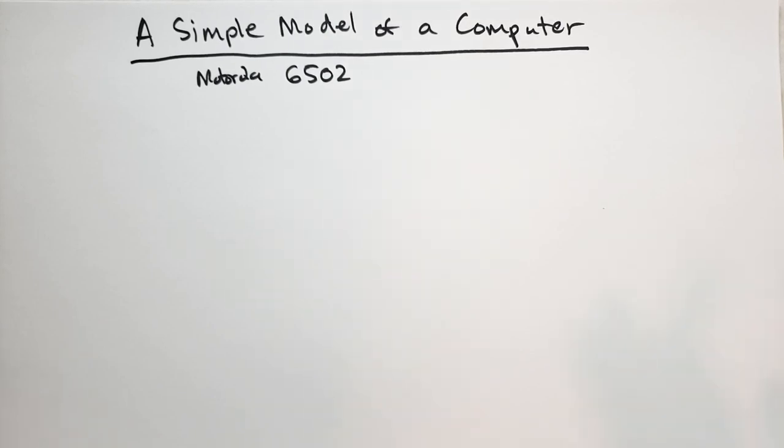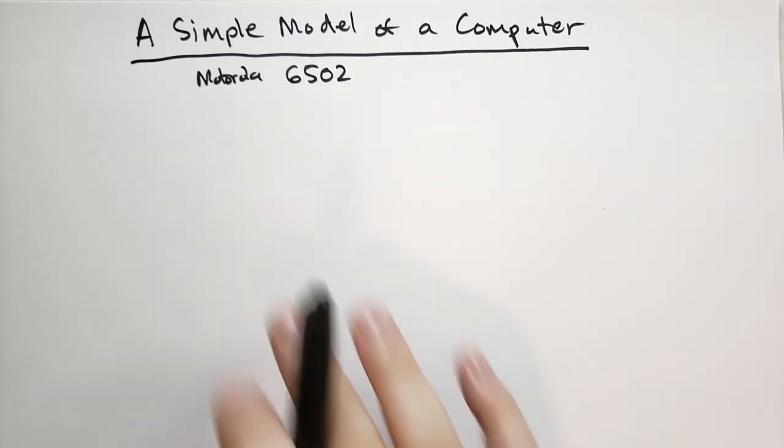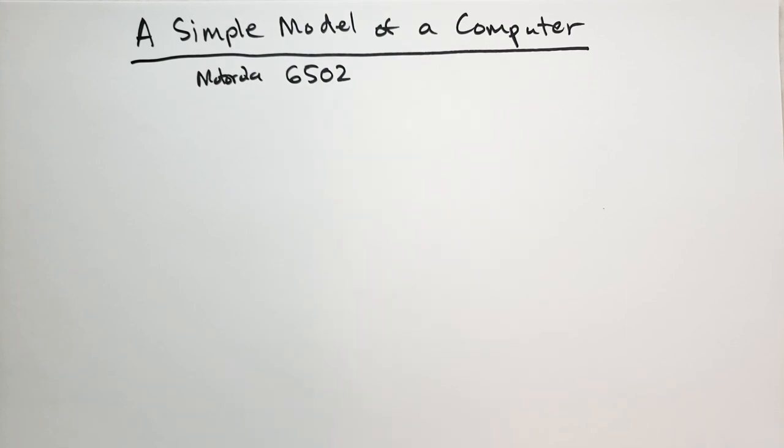Now, modern computers do not behave anything like the 6502 does. However, the idea, the mental model we're going to build up thinking of the Motorola 6502, is going to help us build a correct model of what computers are actually doing.